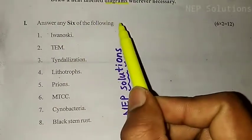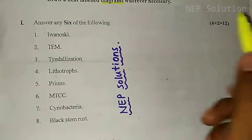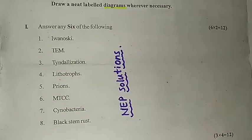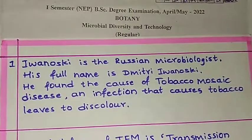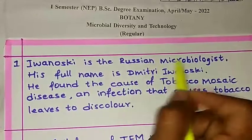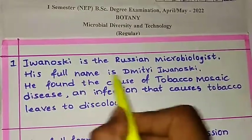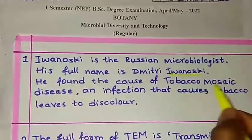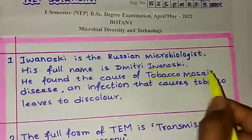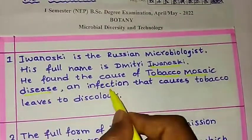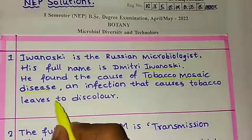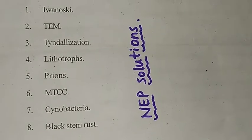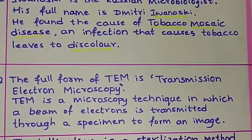Question number one asks us to answer any six of the following for six into 12 marks. The first question is about Ivanovski. Ivanovski is a Russian microbiologist; his full name is Dmitry Ivanovski. He found the cause of tobacco mosaic disease, an infection that causes tobacco leaves to discolor.